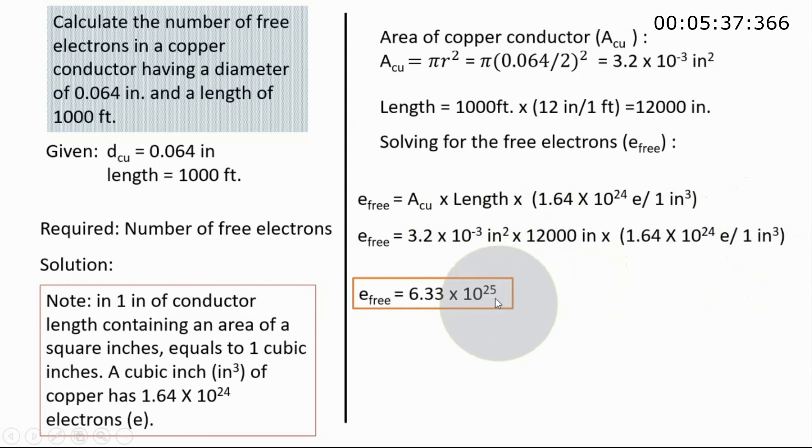This will begin in your display, which is 6.33 times 10 to the 25. This is the free electrons that we are looking for for the copper conductor with diameter and length given.